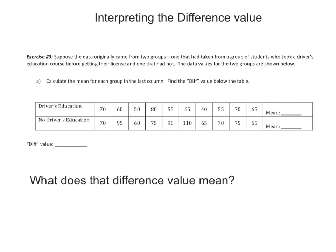So now let's go ahead and work on interpreting what this difference value actually means. So let's say suppose the data originally came from two groups. One that has taken groups from a student who took driver's ed and one that had not. So let's say these speeds were from taking a driver's ed class, the fastest they'd ever gone. And these speeds were from students that never took it, or adults that never took a driver's ed class. Calculate the mean for each one and find the diff value.